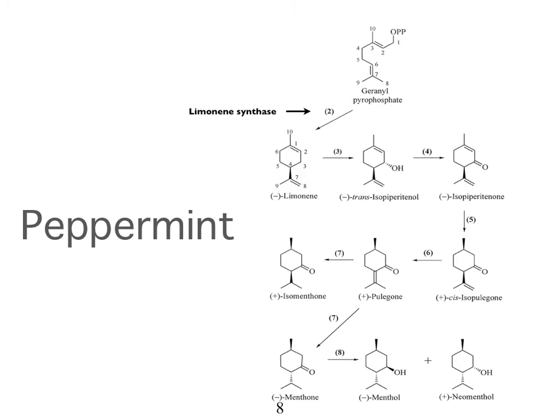The main constituent in peppermint oil is menthol. But in order to make menthol, the plant has to make all these other things first. When you look at the complexity of an essential oil, one probable reason for that complexity is that the plant wants to create menthol and has to go through these different stages. Some of these constituents could be leftovers from the biosynthetic pathway. Perhaps they're just leftovers — which helps explain why we sometimes have a hundred trace constituents in very tiny amounts.